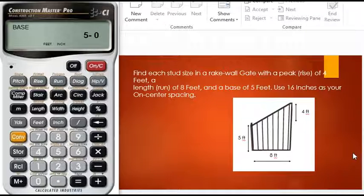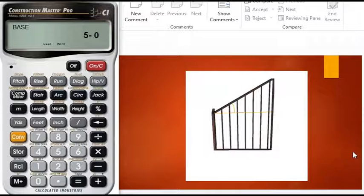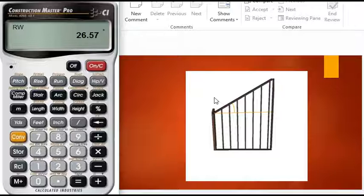Once you found out the length of the studs, what we need to do is find the angle of pitch, that is this angle right here. Press PITCH. Here we go, the angle comes out to be 26.57 degrees. I hope you have understood the tutorial.